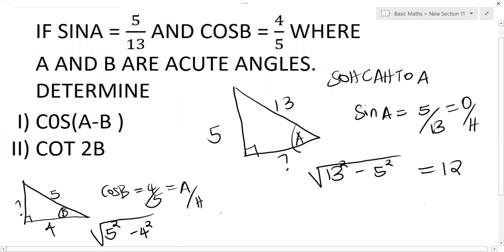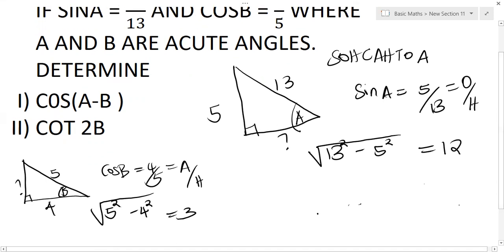Now coming to the expression we have cos A minus B. Using compound angles to open that up, cos A minus B is the same as cos A cos B plus sin A sin B. Now we already have an expression for sin A and sin B.